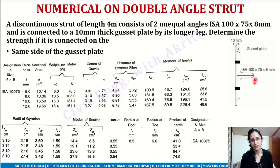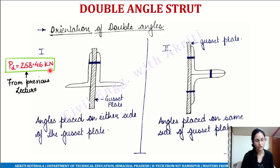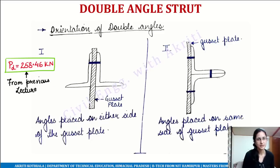Because the geometry has changed, all the calculations will change. Before solving this question, I would request you to visit the previous video linked in the description box so you can study the first part. From the first part our answer was: design strength is equal to 258.46 kN. In this lecture we will draw a conclusion on which of these arrangements is better. So let's start.